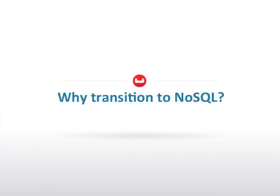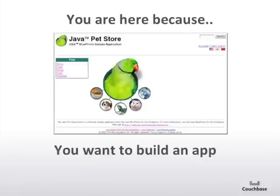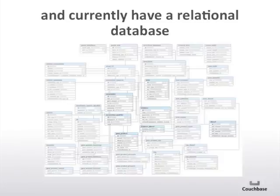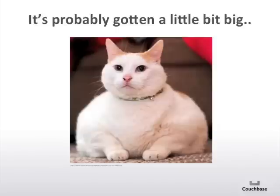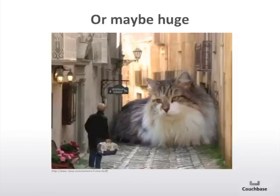Relational technology has been around for quite a while, and there's a ton of applications built around them. There's also a huge ecosystem around these databases, all the way from ETL to BI to reporting tools. So why are users moving forward and adopting NoSQL technology, which is frankly very early in its stages of product maturity? You guys are here because you want to build an app. You might be currently using a relational database, where data is stored in tables and you may have a very complex relationship between different tables in your schema. And your database has gotten a little big, or maybe huge, and definitely complicated.